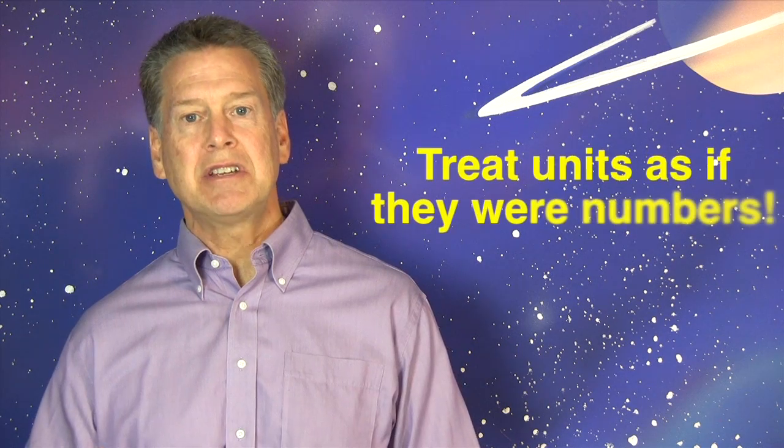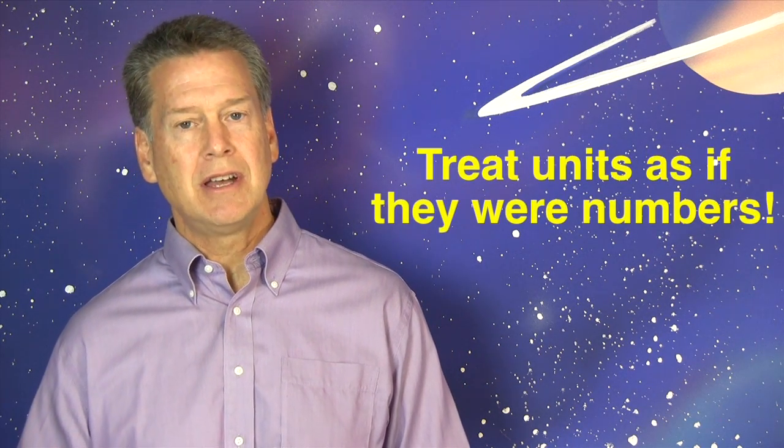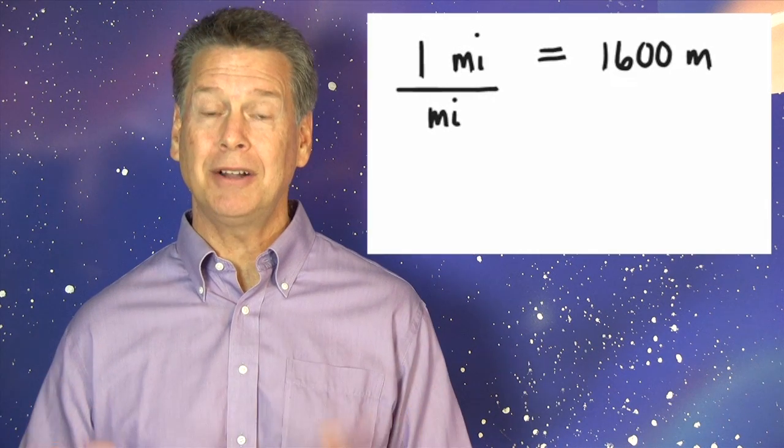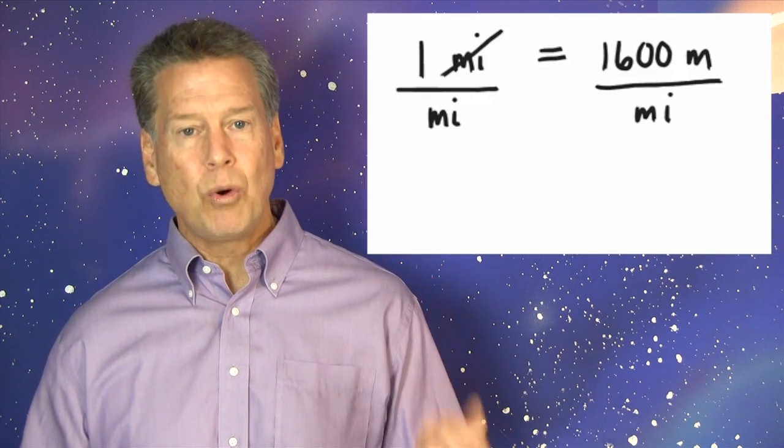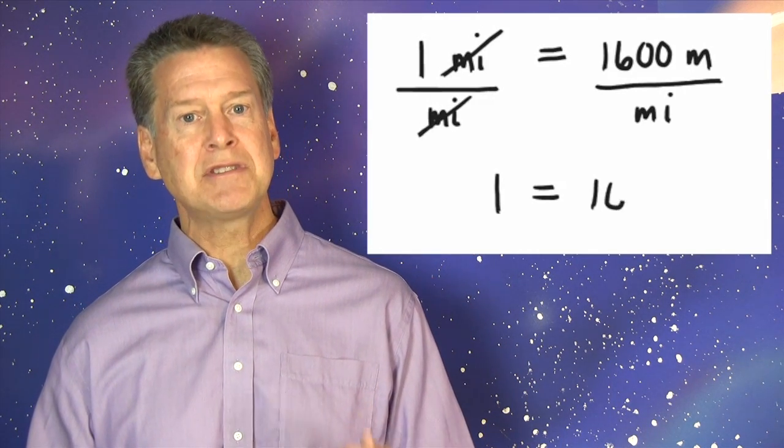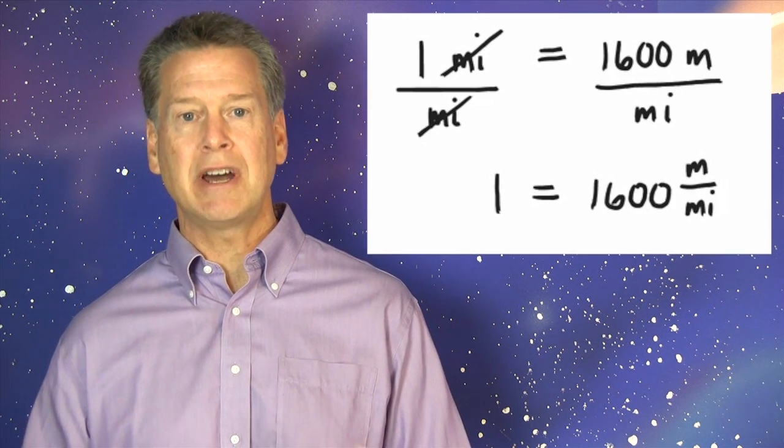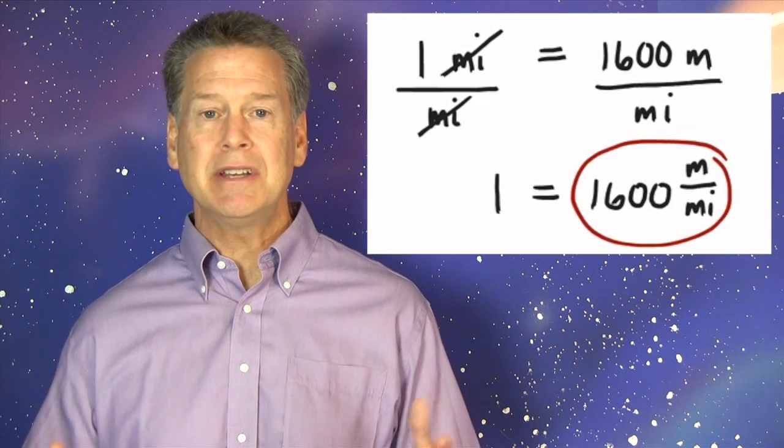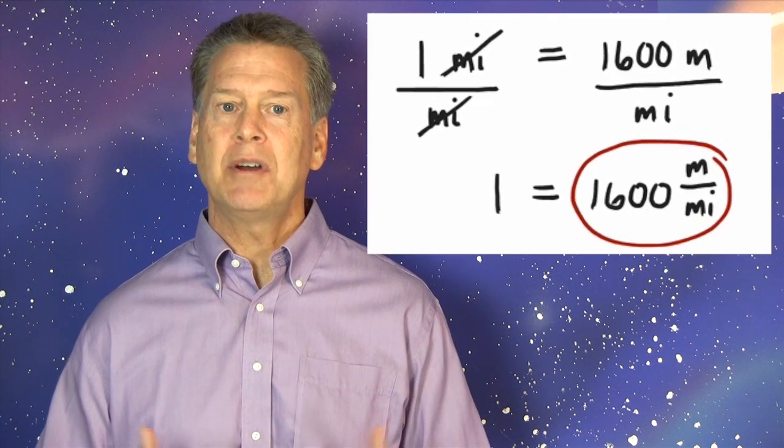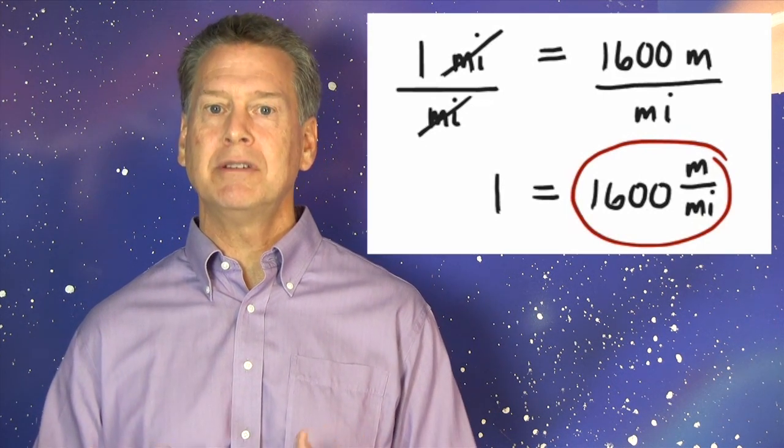Since we can treat the units just as if they were numbers, let's divide both sides of this equation by mile. Then one equals 1,600 meters per mile. There it is. That's the form of one that we need in order to perform the conversion.